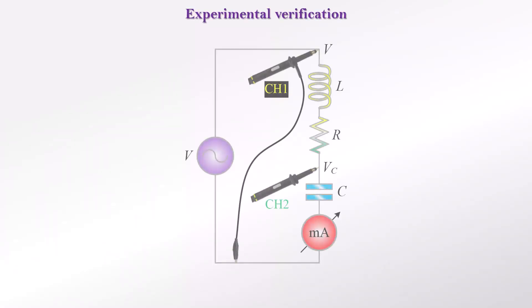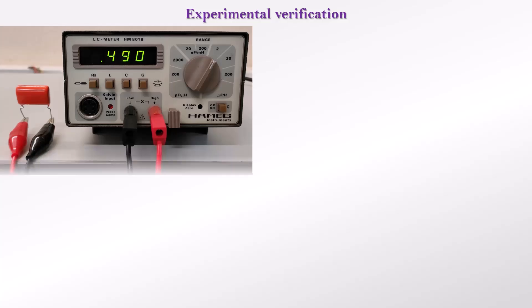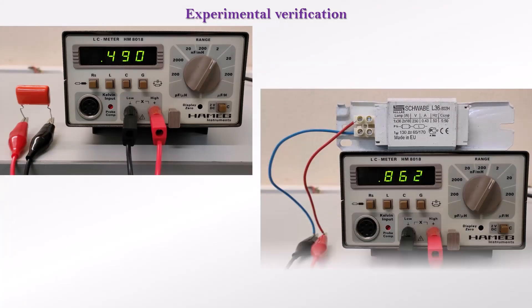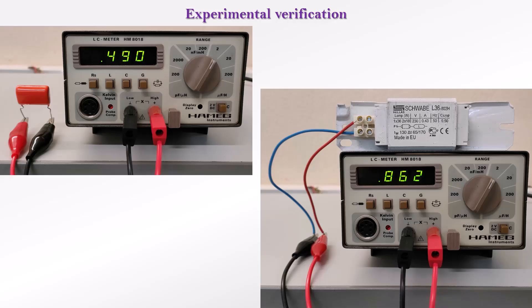In the experimental verification of the resonance, we use a capacitor. Its capacitance was measured with the LC meter, 0.49 microfarads. The ballast from a fluorescent lamp, with an inductance of 0.862 henry, is used as a coil.